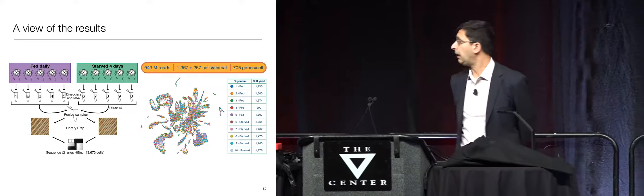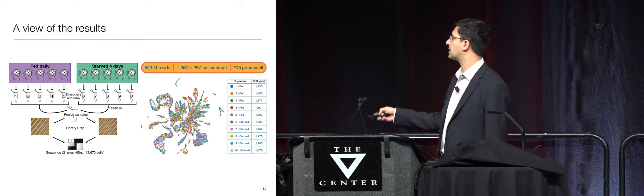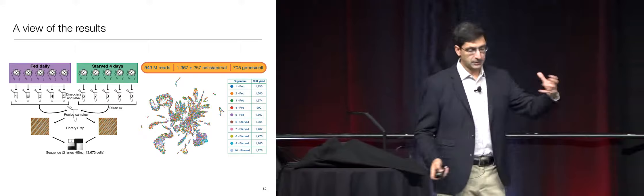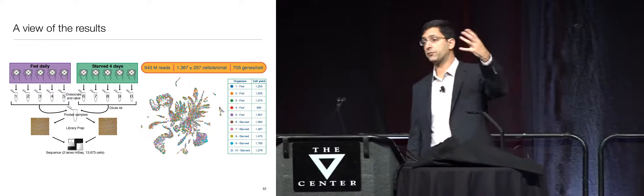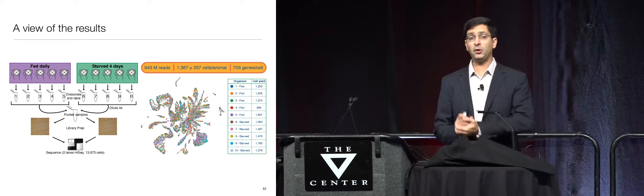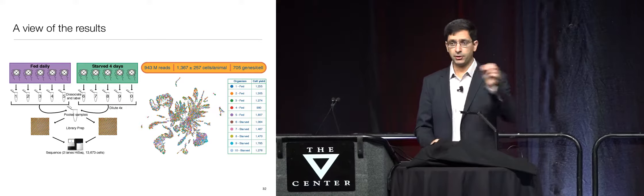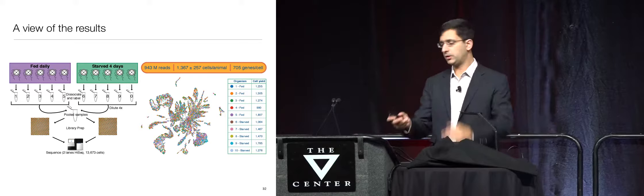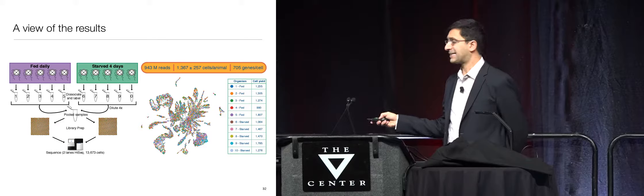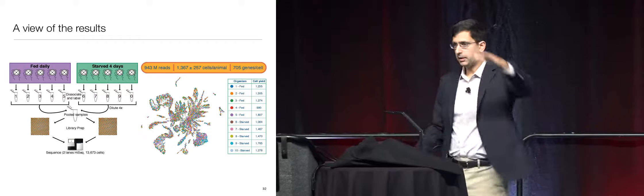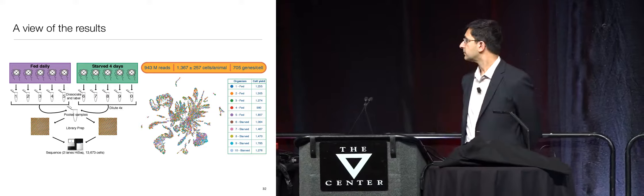Let me get back to the output and show you what actually comes out of such an experiment. This is a representation of the matrix. The ambient dimension of this data is something like 30,000 or 40,000 — the number of genes in this jellyfish. We don't know exactly how many genes there are in this jellyfish. Each dot here is one cell, sitting in 30,000-dimensional space, and it's been embedded in 2D using a method I'll tell you about.